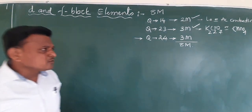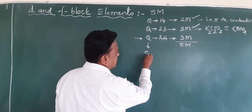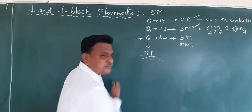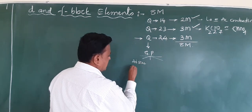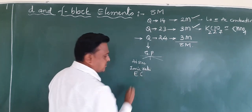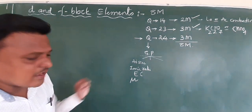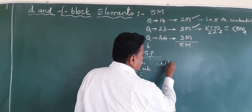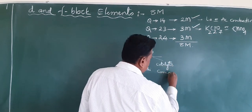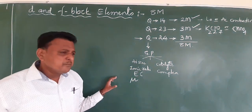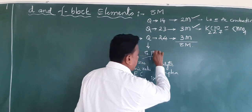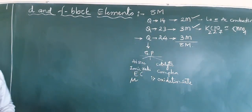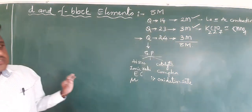Question number 24 is also known, though it is a little lengthy. It is regarding the general properties of D block elements: atomic size, ionic radii, electronic configuration, calculated magnetic moment (mu value), catalytic properties, why they form complexes, and very importantly, variable oxidation state. This is a fixed question — why do D block elements have variable oxidation states? These are the general properties covered in this chapter.